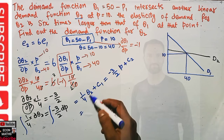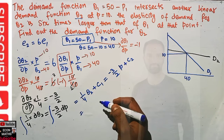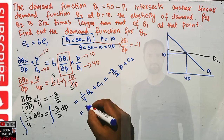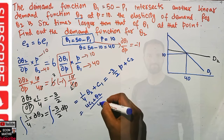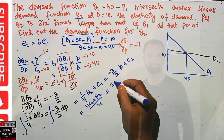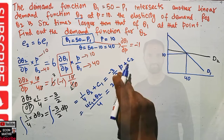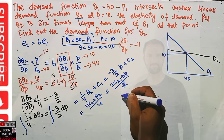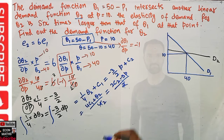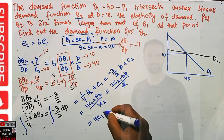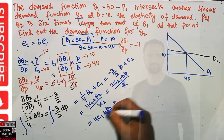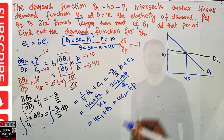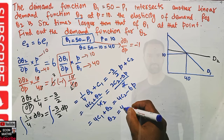Solving for q2: cross multiplying first, we get 4c1 plus q2 equal to 2c2 minus 3p upon 2, times 4. Factoring out: this becomes q2 equal to 4c2 minus 6p minus 4c1. So q2 equals minus 6p plus 4 times (c2 minus c1).